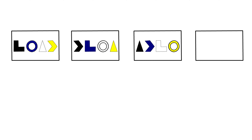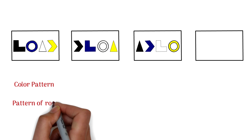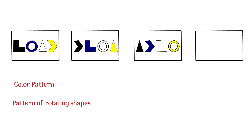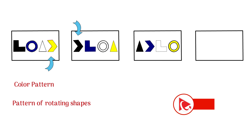In most types of problems there are typically multiple patterns present. For example, let's look at the color pattern: the first shape inside the rectangle is always black, the second shape is always purple, the third shape is always white, and the rightmost shape is always yellow. The second pattern is rotating shapes — the rightmost shape in the previous rectangle always becomes the leftmost shape in the next rectangle. For example, the yellow arrow from the first rectangle becomes the black arrow in the second rectangle.